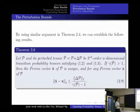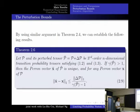By using similar argument in Theorem 2.4, we can establish the following result. Now, Theorem 2.6: Let P and its perturbed tensor P tilde equals P plus delta P be third-order n-dimensional transition probability tensors satisfying 1.2 and 1.3. If gamma of P is larger than 1, then the Perron vector x of P is unique, and for any Perron vector x of P tilde, we have the inequality 2.9 holds.